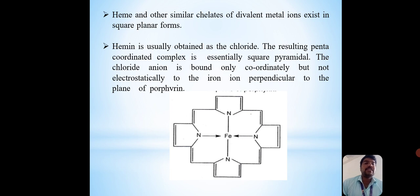Heme and other similar chelates of divalent metal ions exist in square planar forms. Hemin is usually obtained as a chloride. The resulting pentacoordinated complex is essentially square pyramidal. The chloride ion is bound only coordinately but not electrostatically to the iron ion perpendicular to the plane of porphyrin. This is the structure of hemoglobin.